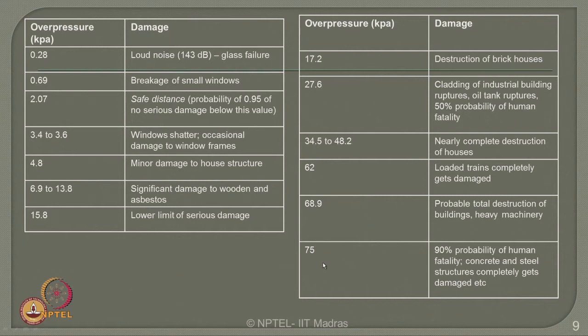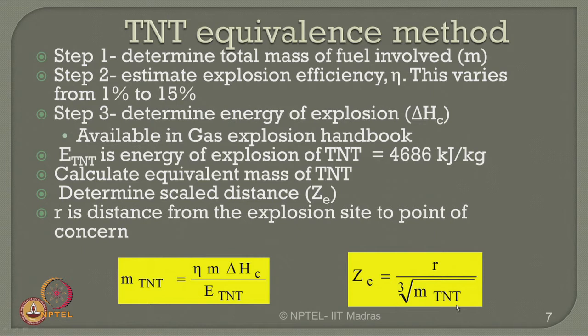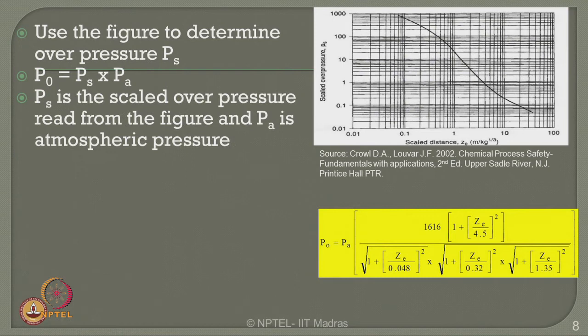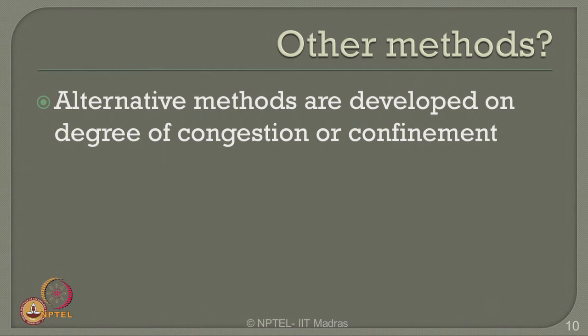It is very important to first convert the given mass to TNT equivalence, then compute the overpressure using the equation or from the chart. For using the chart equation, P_s is taken directly from the chart using Z_d, and Z_d is available from the equation if you know the mass of TNT. Z_d is a local value depending on the distance of the point of concern from the explosion site.